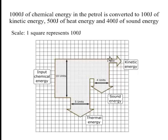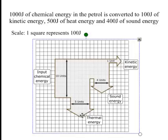Moving across to the kinetic energy, where I get 100 joules of kinetic energy out — that's useful energy — so that's one square wide, and that's pointing in that direction, which indicates that's a useful energy output. The sound energy and the heat energy are wasted energy, so their arrows are pointing downwards. I've got 400 joules of sound energy, which is four squares wide, and 500 joules of heat energy, so that one's five squares wide.